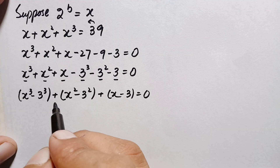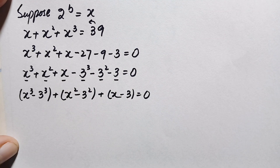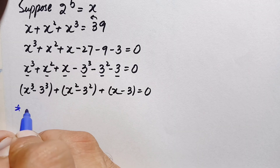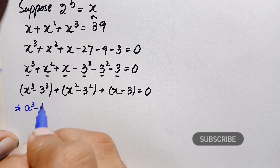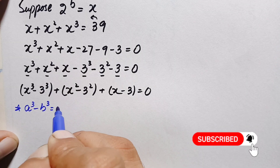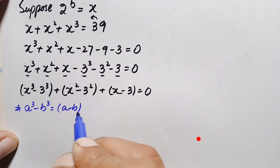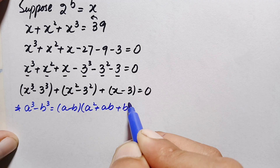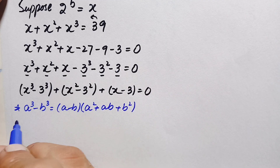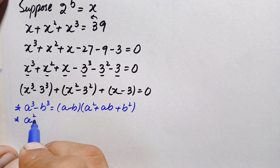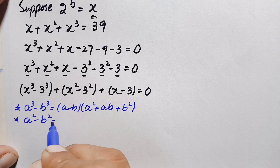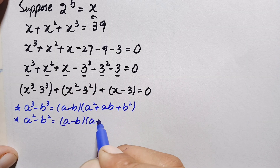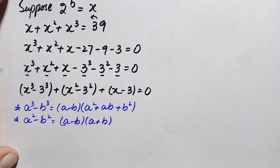For the first group we use the algebraic identity: a cubed minus b cubed equals (a minus b)(a squared plus ab plus b squared). For the second group we use: a squared minus b squared equals (a minus b)(a plus b). We now apply these two identities to the grouped terms.